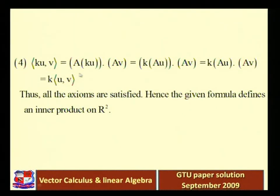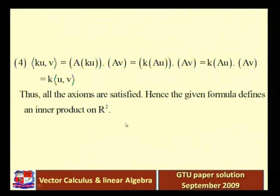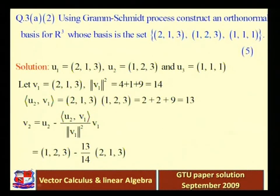The final condition: k·<u,v> equals <ku·av> equals k·au·av, so k comes outside the inner product as a constant, giving k·<u,v>. Thus all axioms are satisfied, hence the given formula defines an inner product on R². Next: Question 3, part A, second part.